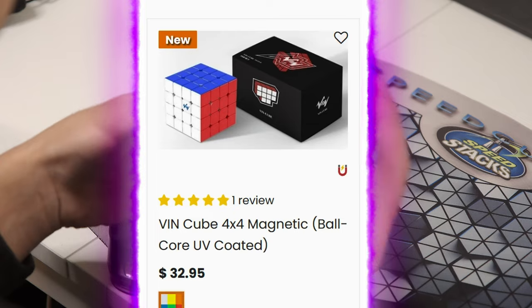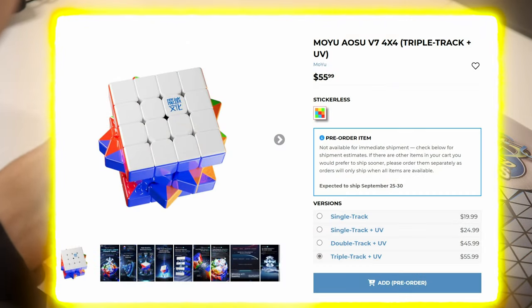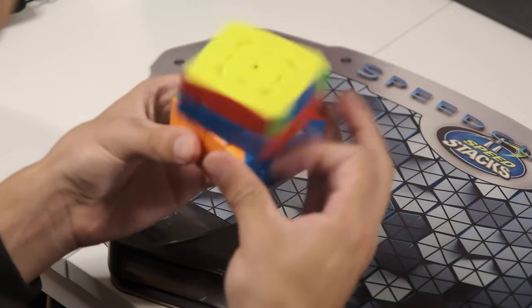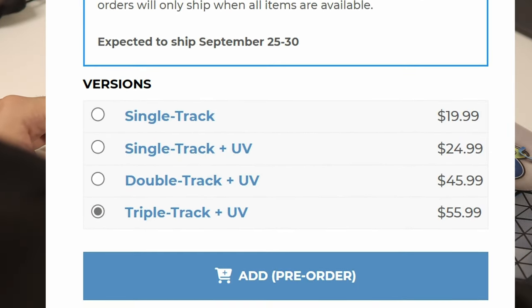The question is which one's cheaper, and that title goes to the VinCube ball core at $32.95. The Aosu V7 triple track, which is the best version, is $55.99. Even if you get the step-down version, the double track, it would still be more at $45.99.